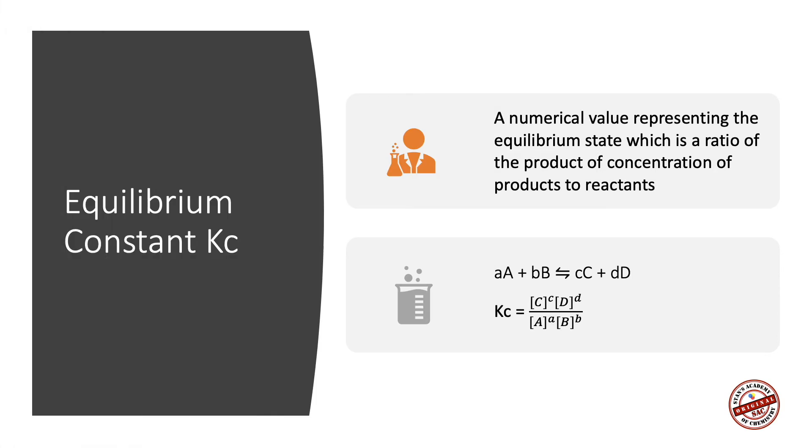Equilibrium Constant Kc. A numerical value representing the equilibrium state, which is the ratio of the product of concentration of products to reactants, and this value can be used to determine whether a system has achieved equilibrium or not.